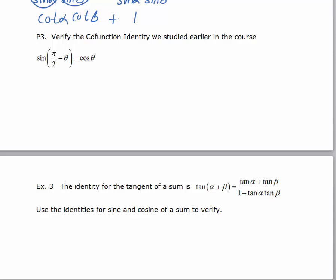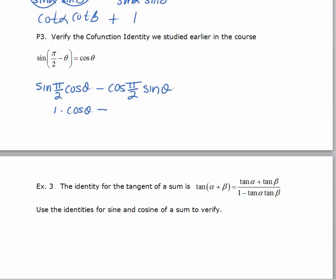We can verify it using these identities. The sine of pi over 2 minus theta, we'll rewrite as sine of pi over 2 times cosine theta minus cosine of pi over 2 times sine theta. The sine of pi over 2 is 1, so we get 1 times cosine theta minus 0 times sine theta. That term cancels out because of the zero, and you're left with cosine theta. So we've just verified the co-function identity for sine and cosine.